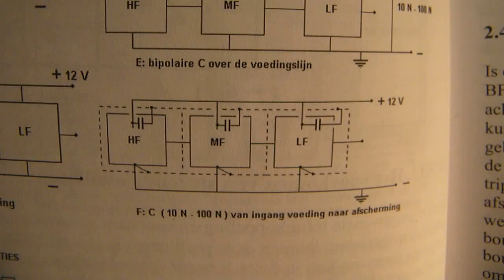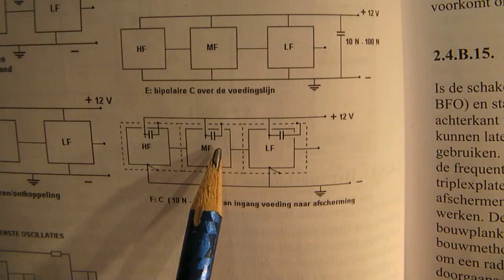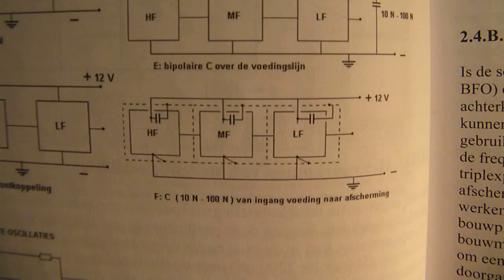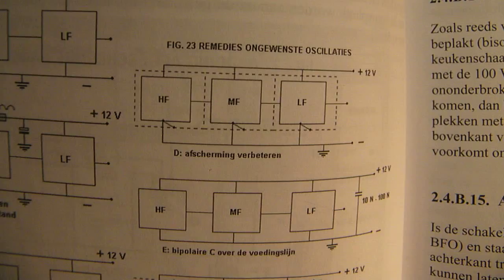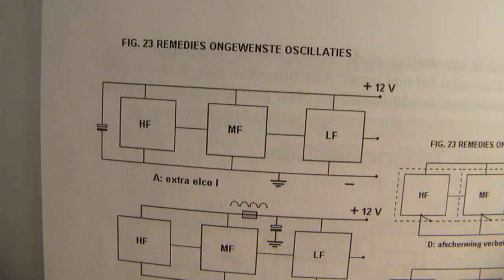Shielding and here small caps in the 1 nF range to shield out all the disturbing problems from the power supply lead. Many problems about the parasitic oscillations go out of the power supply lead.